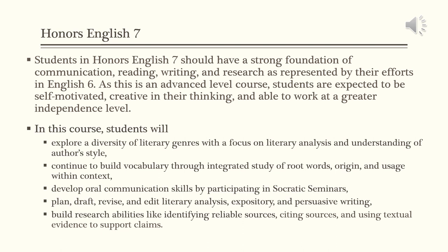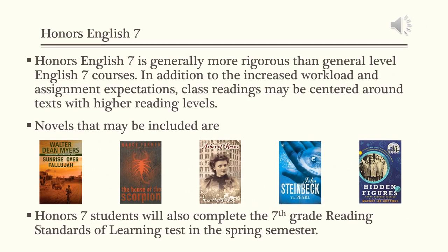Students will plan, draft, revise, and edit literary analysis, expository, and persuasive writing, and build research abilities like identifying reliable sources, citing sources, and using textual evidence to support claims. Honors English 7 is generally more rigorous than general level English 7 courses. In addition to the increased workload and assignment expectations, class readings may be centered around texts with higher reading levels.